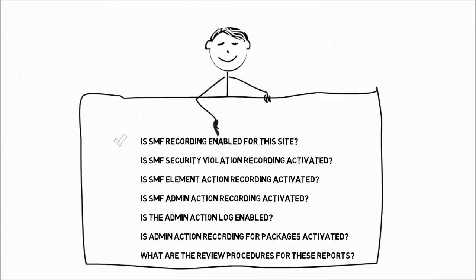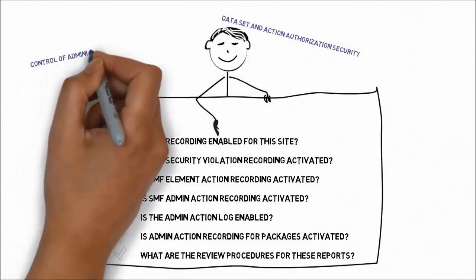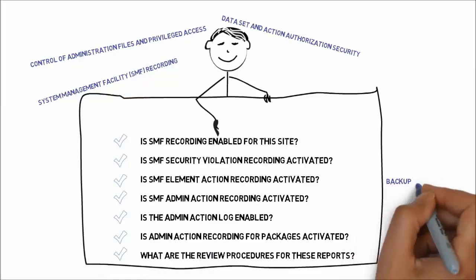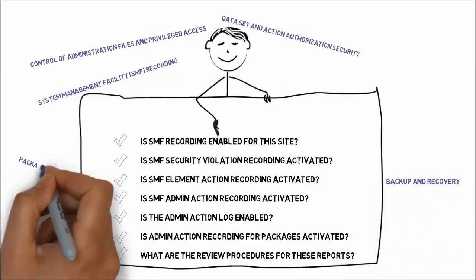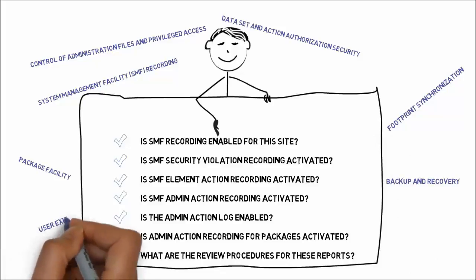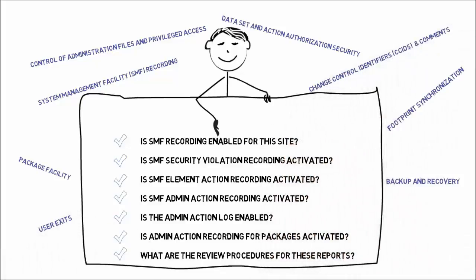The IT Audit Checklist is comprised of a checklist for each of the nine audit areas. This is only an example of the SMF recording portion of the checklist. There are sections within the checklist, one for each of the nine audit areas, including Data Set and Action Authorization, Security Control of Administration Files and Privileged Access, Systems Management Facility, Backup and Recovery, Package Facility, Footprint Synchronization, User Exits, Change Control Identifiers (CCIDs) and Comments, and Element Registration. For details on each area or to view the complete checklist, please refer to the CA Endeavor SCM IT Audit Guidelines article.